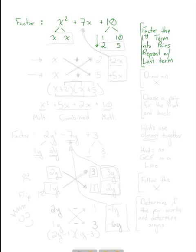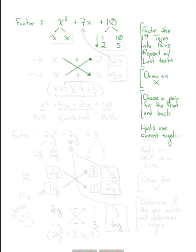Once you've factored, we're going to draw an X — and this is why we call it the x-factor method. I draw an X with little arrows on the end because this guides me to fill in the blanks. Now, choose a pair for the front and back. The hint is to use the pairs that are closest together.